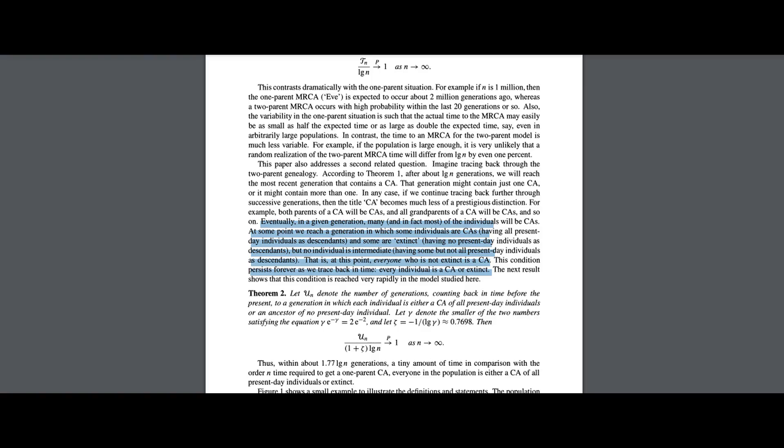According to the Chang paper, eventually, in a given generation, many — and in fact most — of the individuals will be common ancestors. At some point, we reach a generation in which some individuals are common ancestors, having all present-day individuals as descendants, and some are extinct, having no present-day individuals as descendants. But no individual is intermediate, having some but not all present-day individuals as descendants. That is, at this point, everyone who is not extinct is a common ancestor. This condition persists forever as we trace back in time — every individual is either a common ancestor or extinct. This is called the identical ancestors point. The time required to go from that most recent common ancestor to the identical ancestors point is only 1.77 times older than that most recent common ancestor.